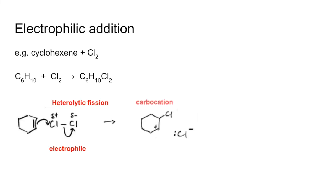That's going to give us this carbocation, a chloride ion, and then the chloride ion attaches itself to the positively charged carbon like that. And we get the product 1,2 dichloro cyclohexane.